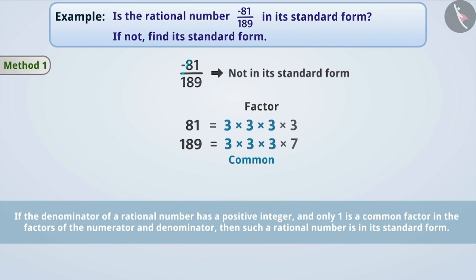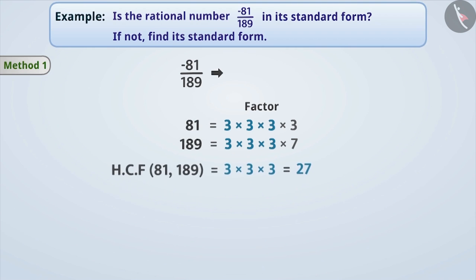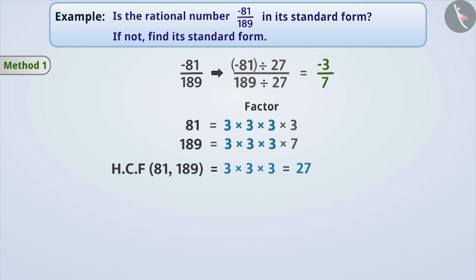So let's find the standard form of this rational number. First, we multiply 81 and 189 with their common factors to get the HCF, which is 27. Now we divide both the numerator 81 and denominator 189 by their HCF 27. This gives us the rational number minus 3 by 7, which is the standard form of minus 81 by 189.